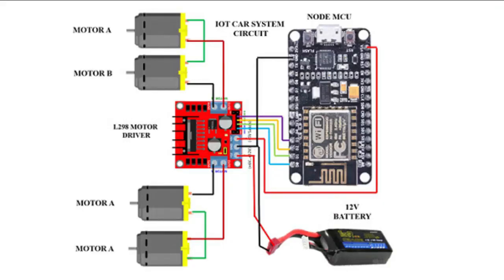First of all, I will be showing the components of my car that I have drawn out. I am using a NodeMCU. Then there is a 2-channel motor driver. There is also a switch, a battery, and these are my 4 motors, because I am going to make a 4-wheeler IoT car. For the input connection, I am using digital pins D0 to D3 — D0 to input 1, D1 to input 2, D2 to input 3, and D3 to input 4. You can use any pins; it is not necessary to start from D0.